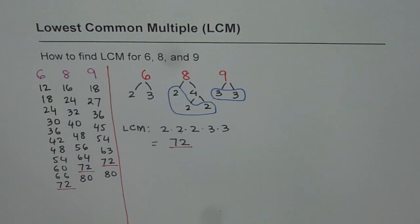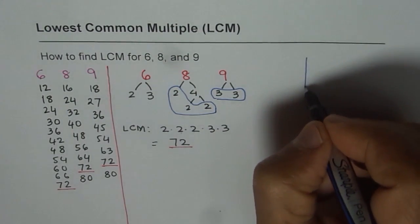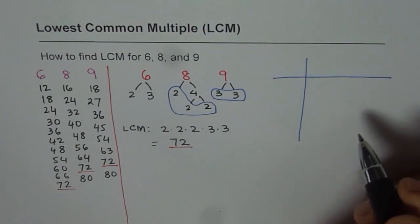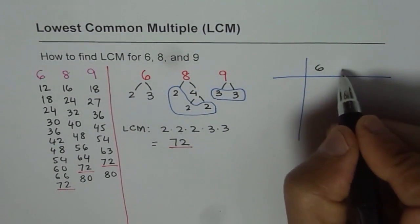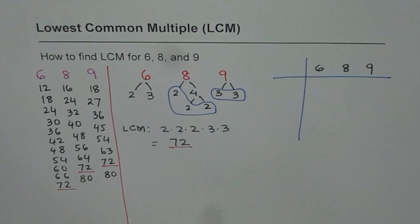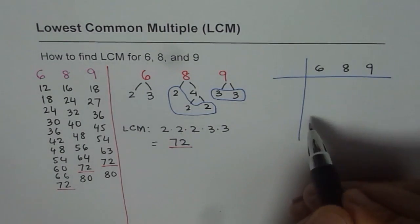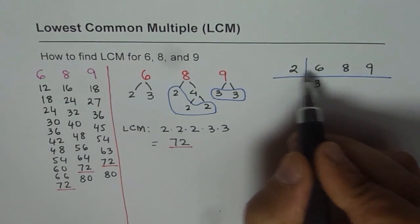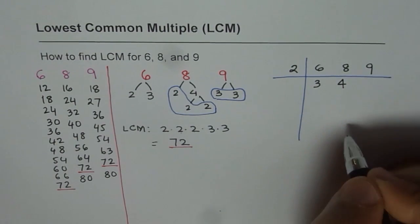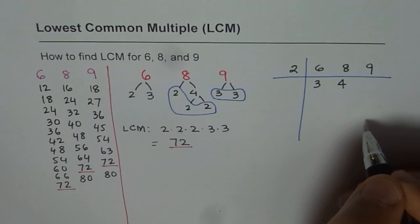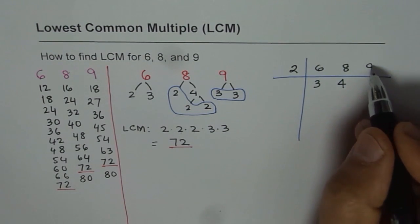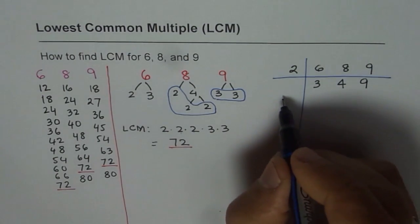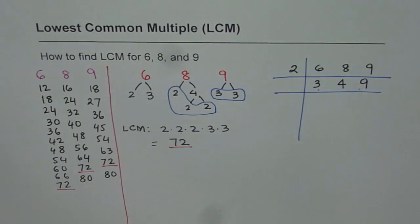Now I will teach you another method — that is by division. What we do is repeatedly divide the numbers. We have 3 numbers: 6, 8 and 9. We can divide at least 2 of them by 2. If I divide 6 by 2, I get 3. If I divide 8 by 2, I get 4. But if I divide 9 by 2, I do not get a whole number, so 2 is not a factor of 9. In that case, I will just write 9 as such.